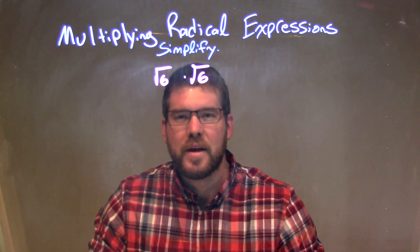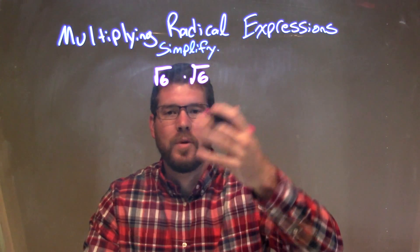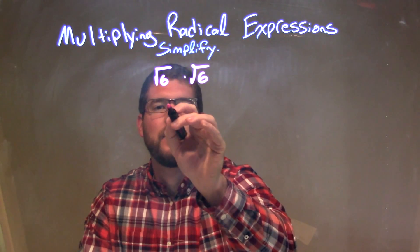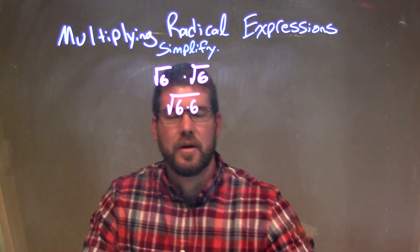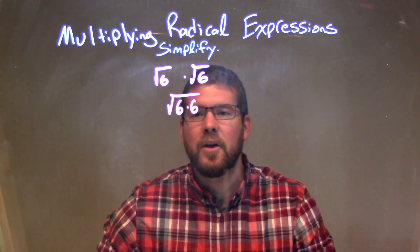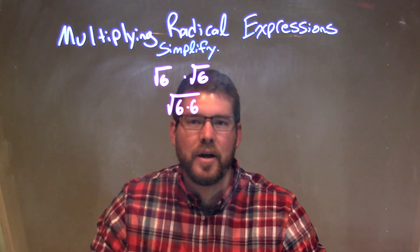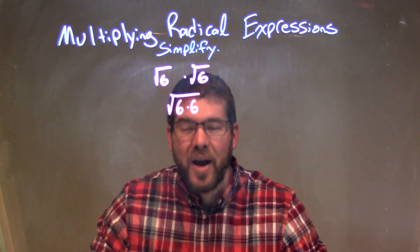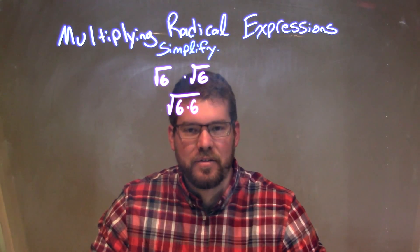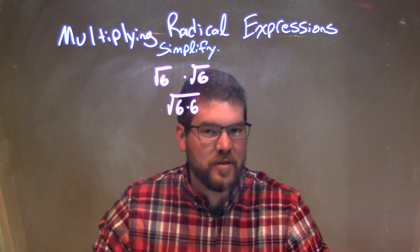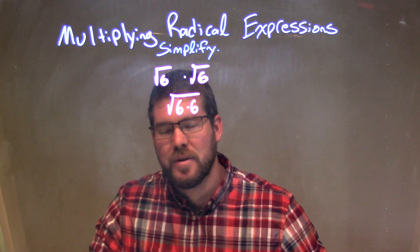Well, this one's actually fairly simple. So we have square root of 6 times square root of 6. We can combine that to be under one square root: 6 times 6 right there. And normally we're looking for our pairs, right? We're breaking them down, finding our pairs. But I already have a pair here — a pair of 6s, 6 times 6, which we know is 36. Square root of 36 is back to be 6.